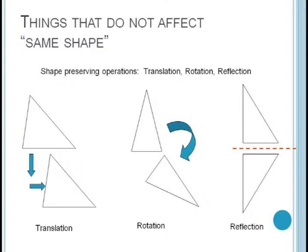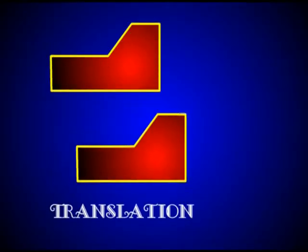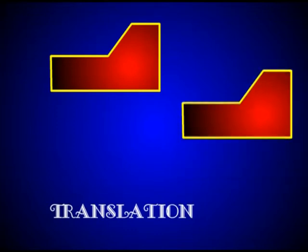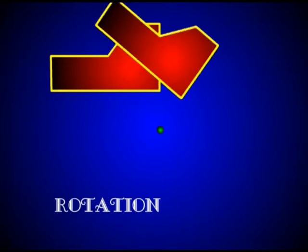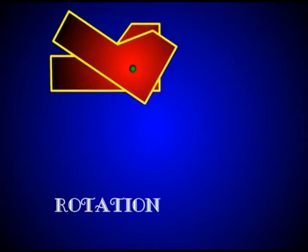There are several ways to manipulate an object that preserves the shape. Typically these include translation, rotation, and reflection. Translation allows us to move the object up, down, right, or left, as far as we wish, while rotation allows us to swivel the shape around a point. These two only require sliding a shape around the plane.